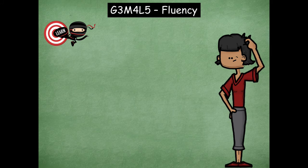Hey boys and girls, it's Mrs. Walker. Today for a fluency activity we're going to focus on two different activities. The first one we're going to be using arrays to find the product, and that's going to tie into our actual lesson today for our concept development where we're going to actually be using partial arrays to help us find the area of a rectangle. Then our second fluency activity is going to be all about skip counting, and remember skip counting is helpful in so many ways and it definitely helps you with your multiplication.